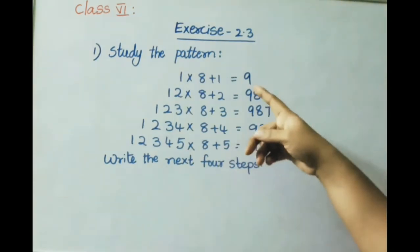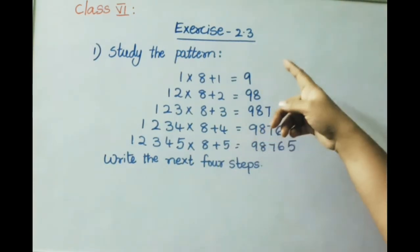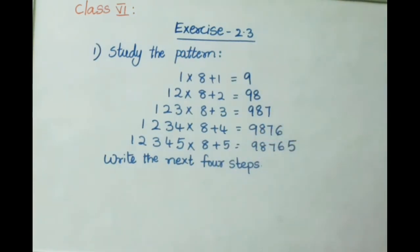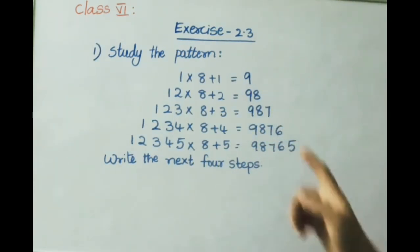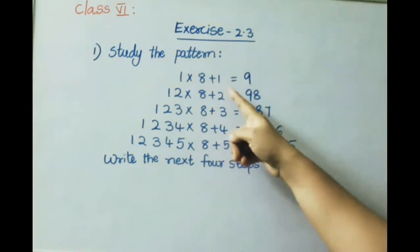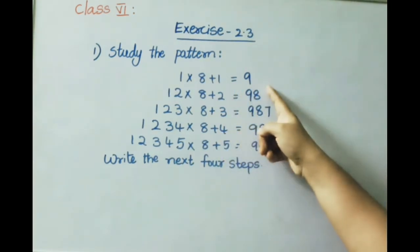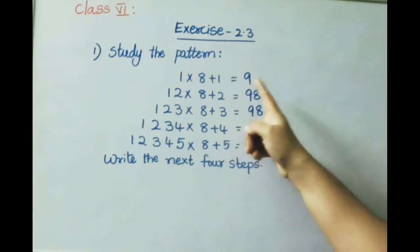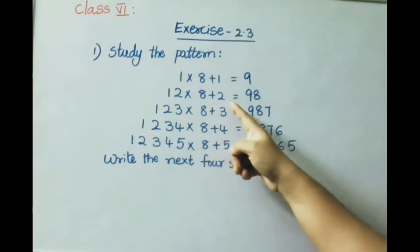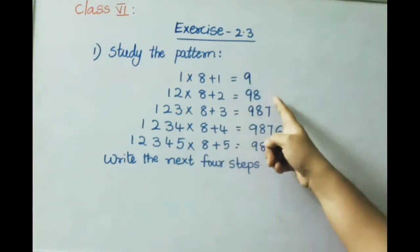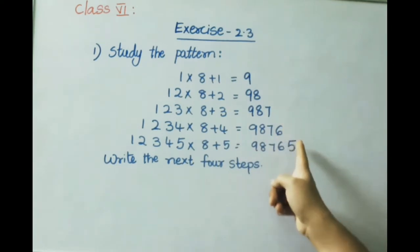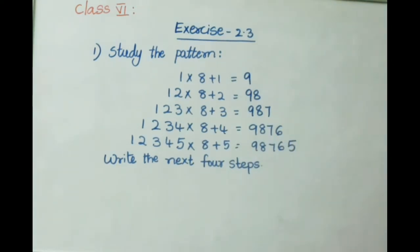Now see the first sum in Exercise 2.3: Study the pattern. 1 into 8 plus 1 equals 9. 12 into 8 plus 2 equals 98. And so on. We need to write the next 4 steps.